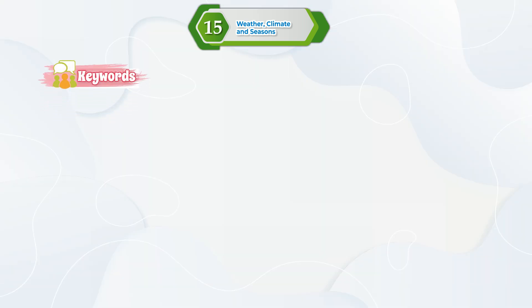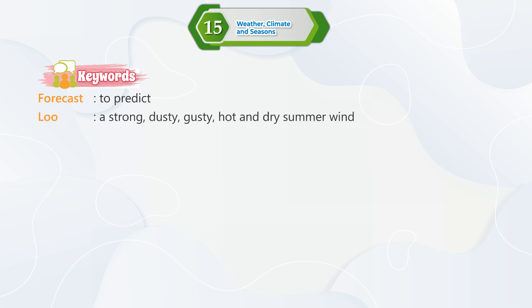Keywords. Forecast: To predict. Loo: A strong, dusty, gusty, hot and dry summer wind.